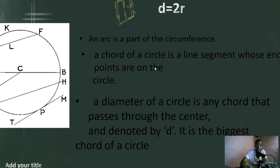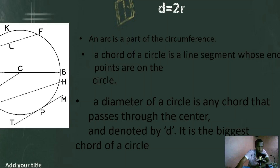A chord is a line segment with any two points on the circle. The diameter is the largest chord. The next one that you need to know is about radius. Radius is half of the circle — half of the diameter.